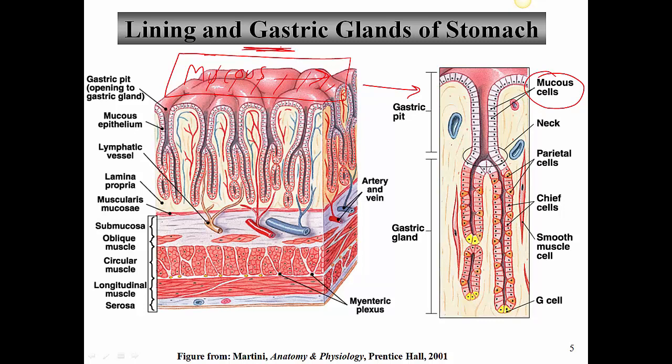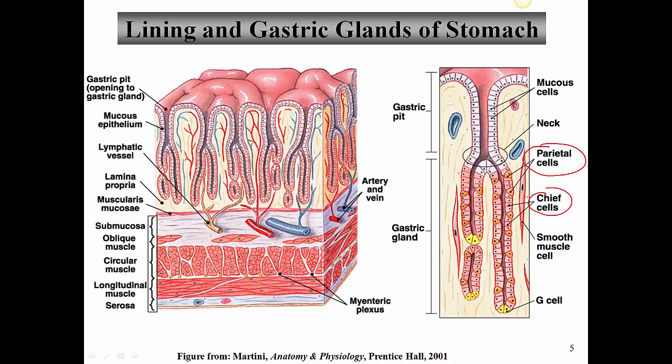These mucus glands are extremely important in protecting the stomach from being digested by its own enzymes — its own gastric juice. As we pass from the neck region and go further down, we have several different types of cells: parietal cells, chief cells, and down at the very bottom a D cell. This is where we have the D cells that secrete somatostatin. The G cells secrete gastrin — two important hormones that control digestion. Throughout these gastric pits, we have cells that secrete pepsinogen as well as acid.